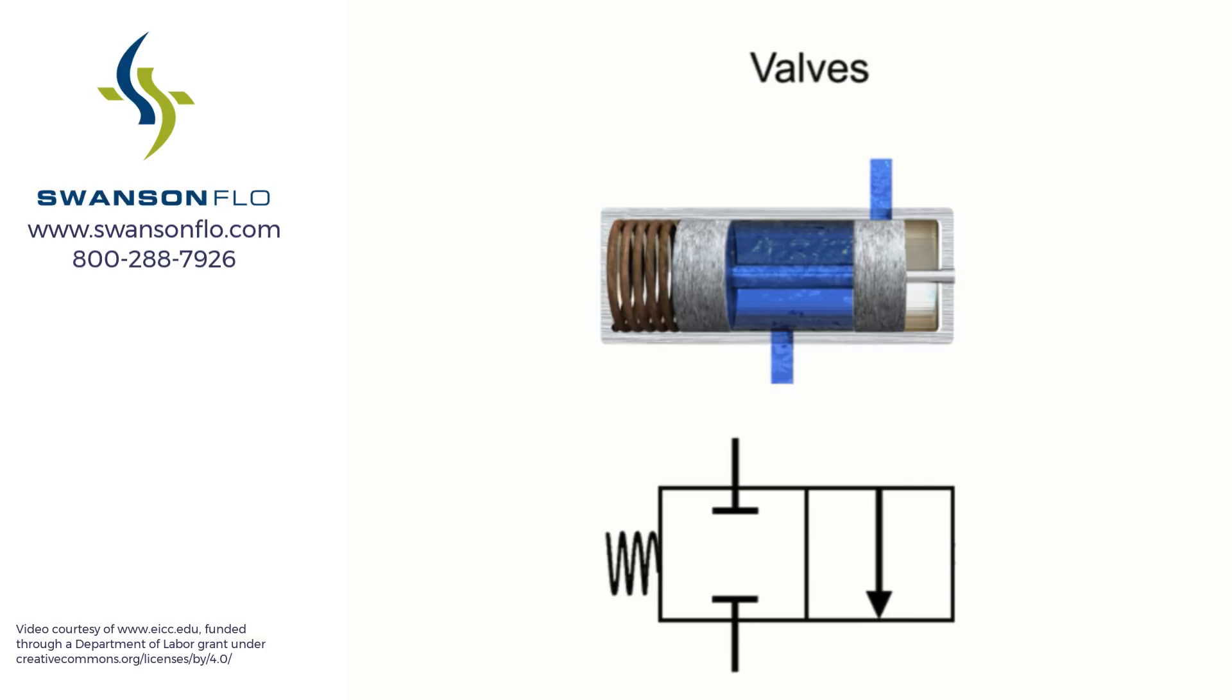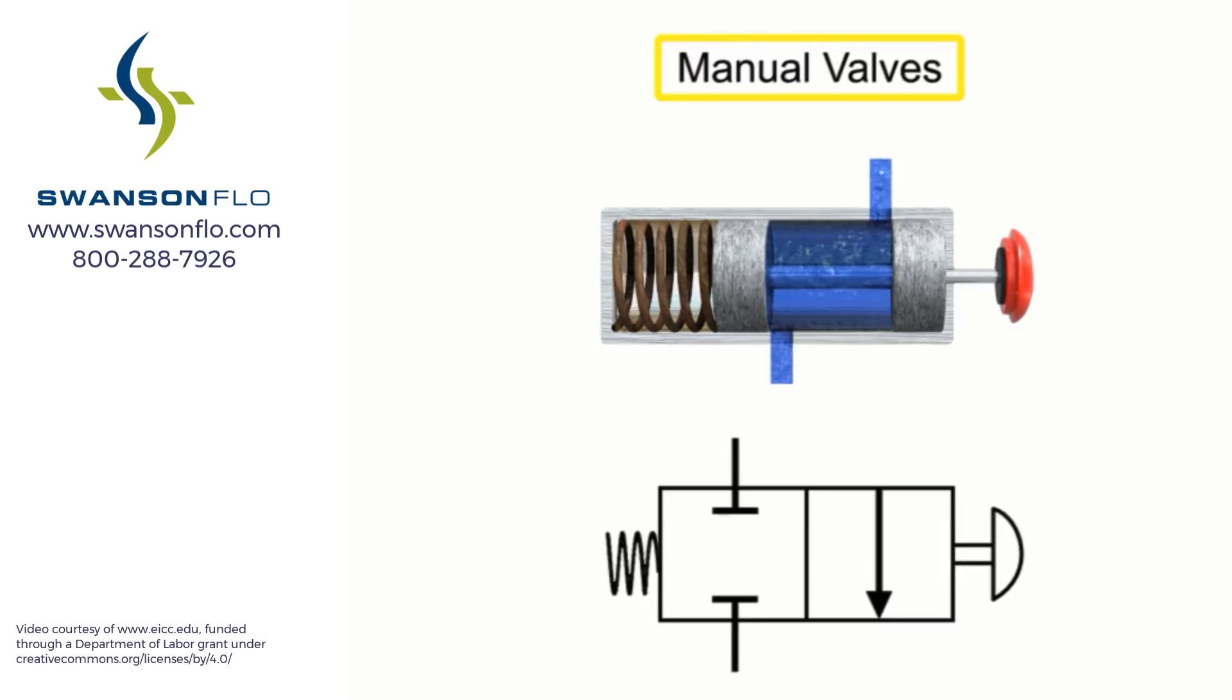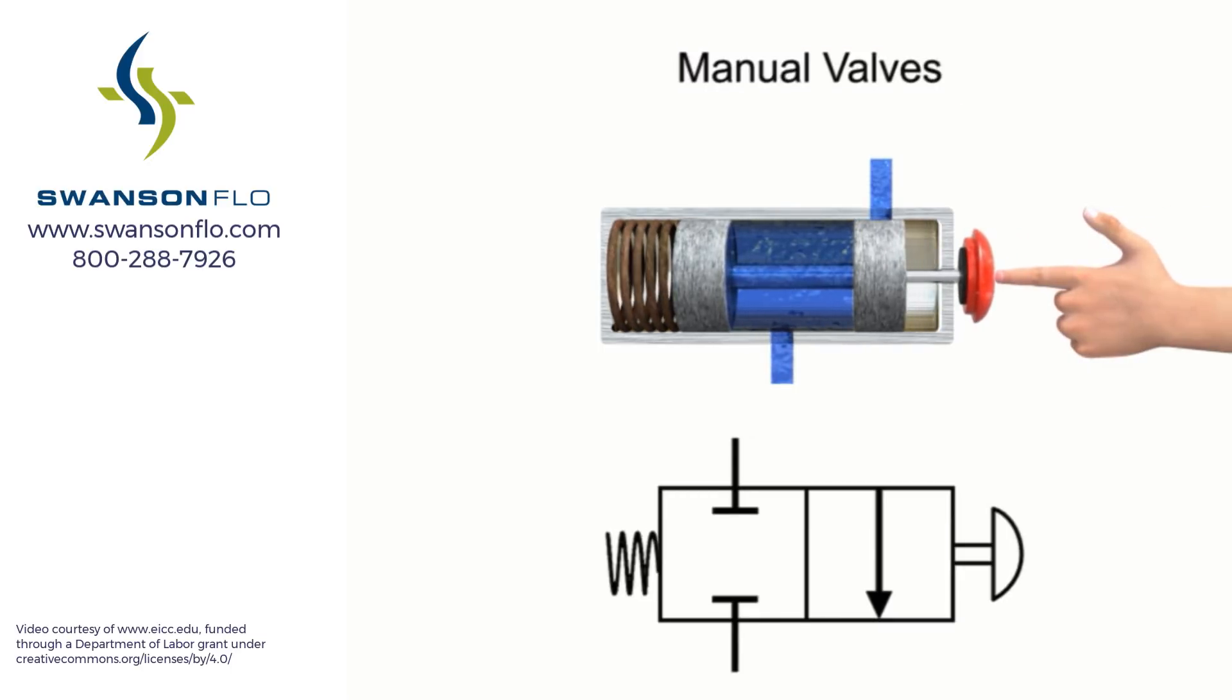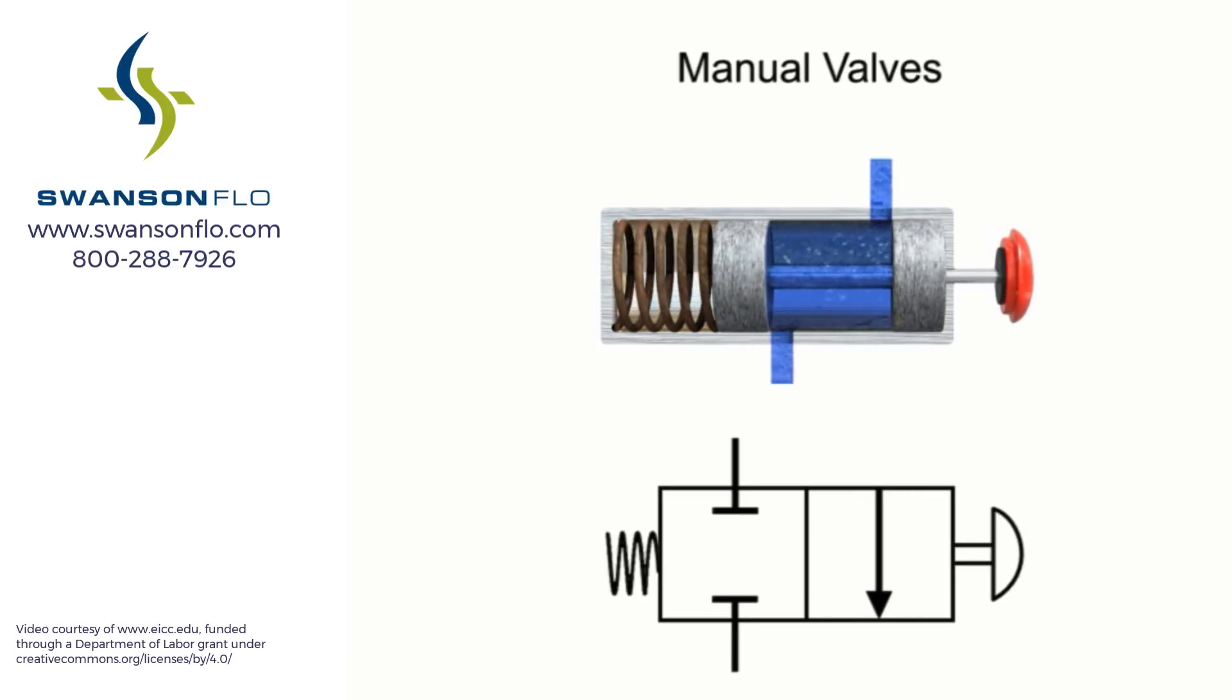Control valves for these functions can be purchased with either manual or solenoid actuators. In a manually actuated valve, the internal cylinder is shifted by hand using a lever, push-button, plunger, or other manual actuating device.